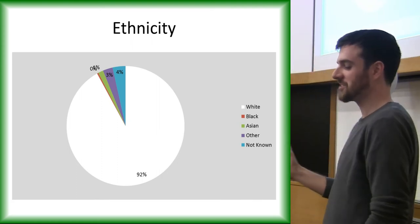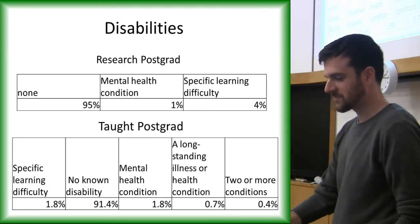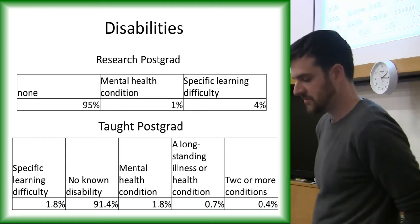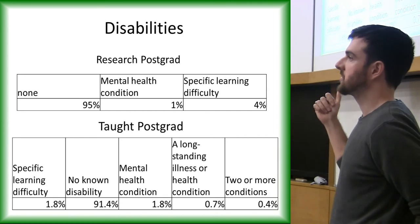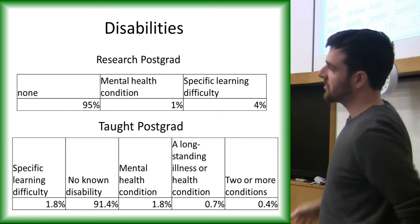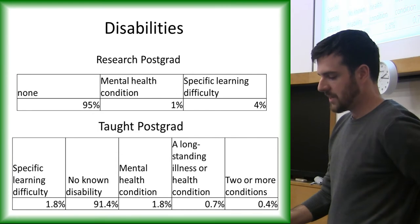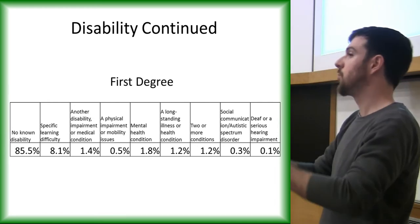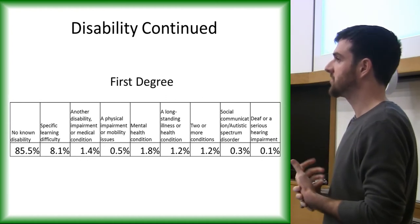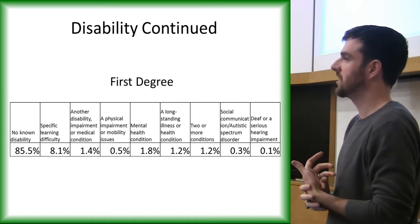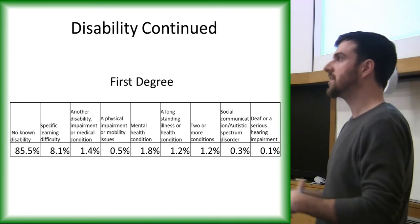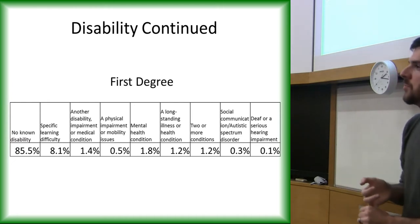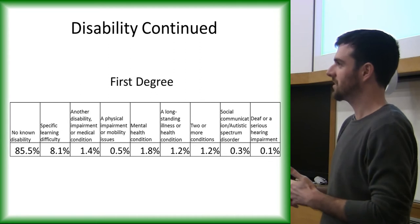Archaeology actually attracts a fairly high percentage of students with disabilities. It doesn't attract as many at the PhD level — very few. Specific learning difficulties is basically things like dyslexia. For first degrees, dyslexia is about 8.1% — the normal student at a UK university is about 1.5%. So archaeology attracts a lot more students with learning disabilities than other fields. That is a trend with hands-on subjects — geology and agriculture also attract a lot of people with dyslexia. About 5% more likely to be dyslexic if you're an archaeology student than normal.